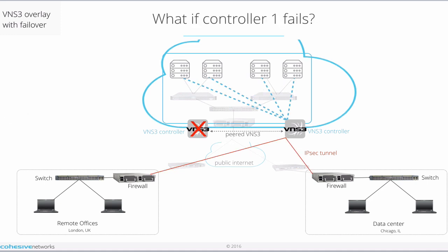In the instance of a VNS3 controller failure — say this is the primary controller — if it's unavailable for any reason, the client server can automatically attempt to connect to the other controllers in the topology. This shows the failure of controller 1, and then controller 2 takes over as the primary role. Peered controllers provide overlay network failover high availability, but not IPsec failover.